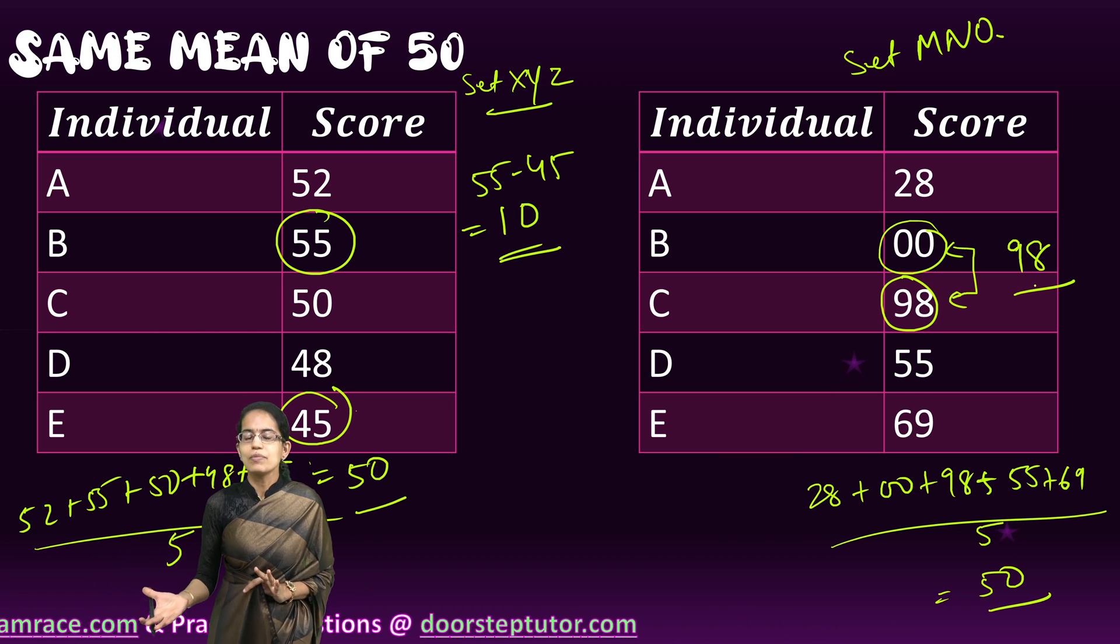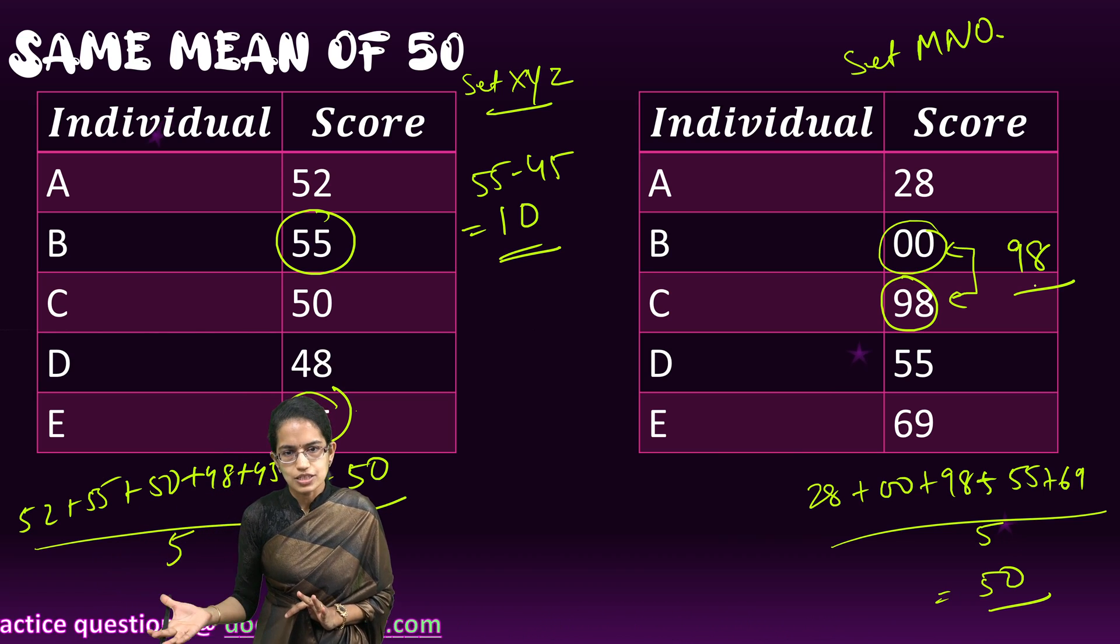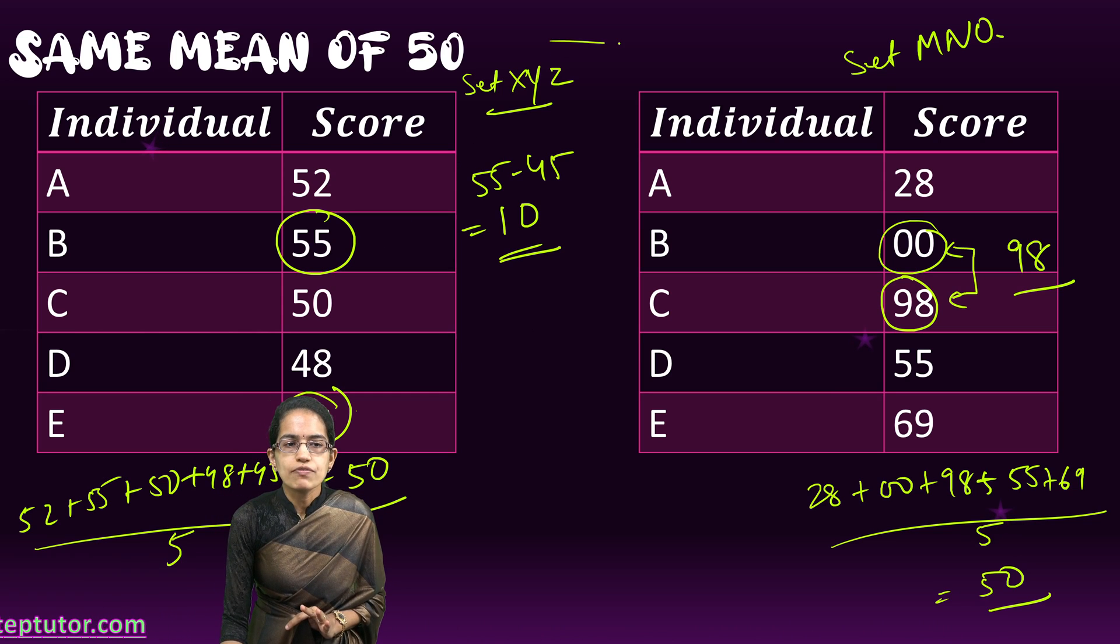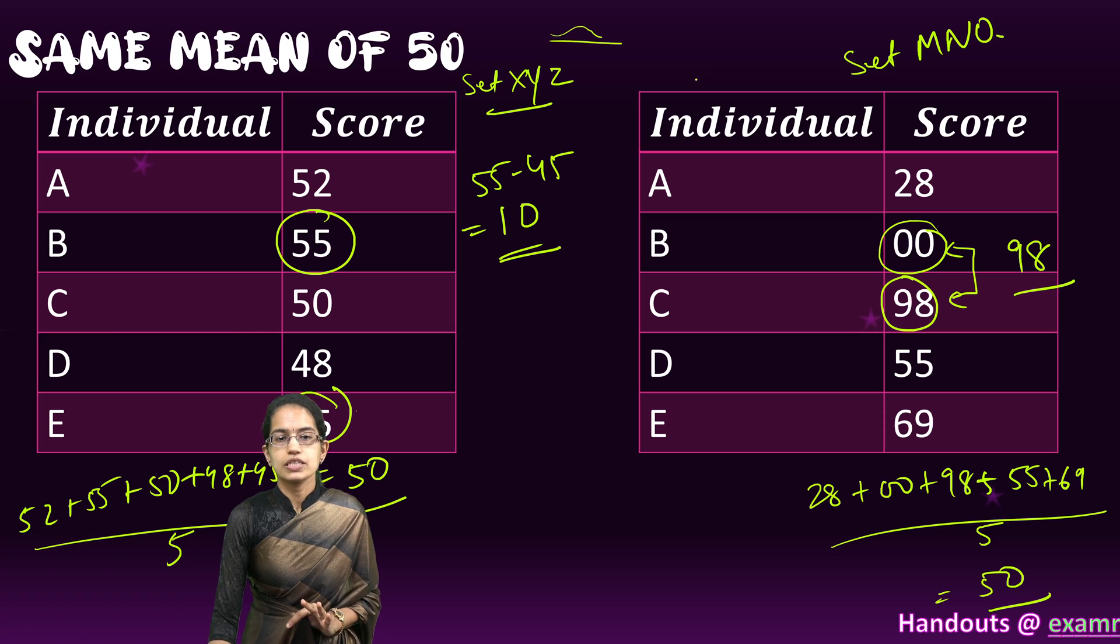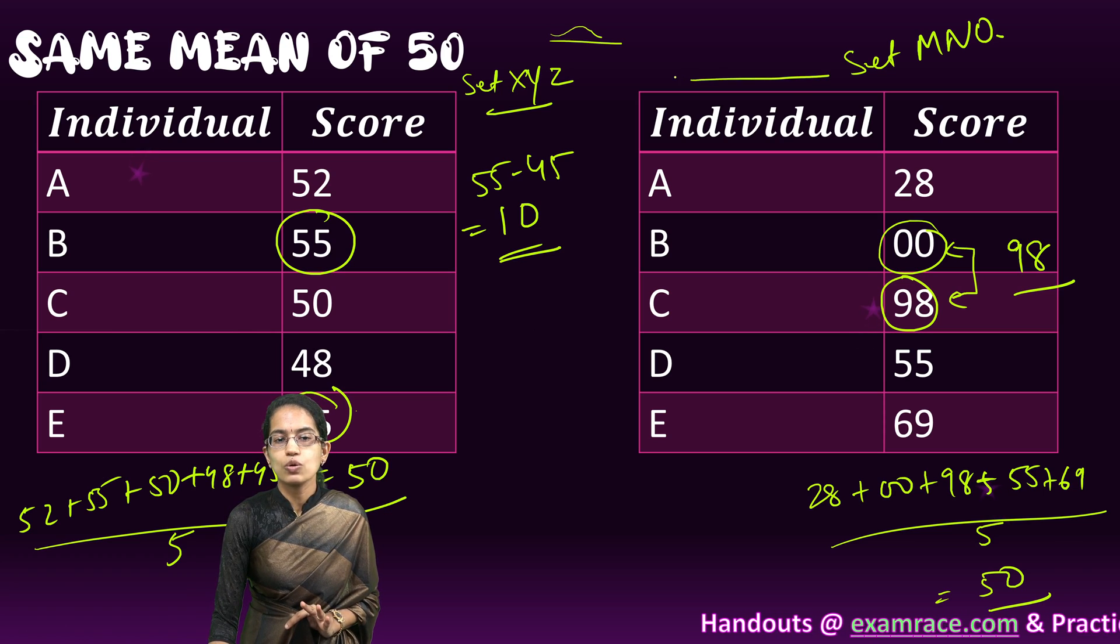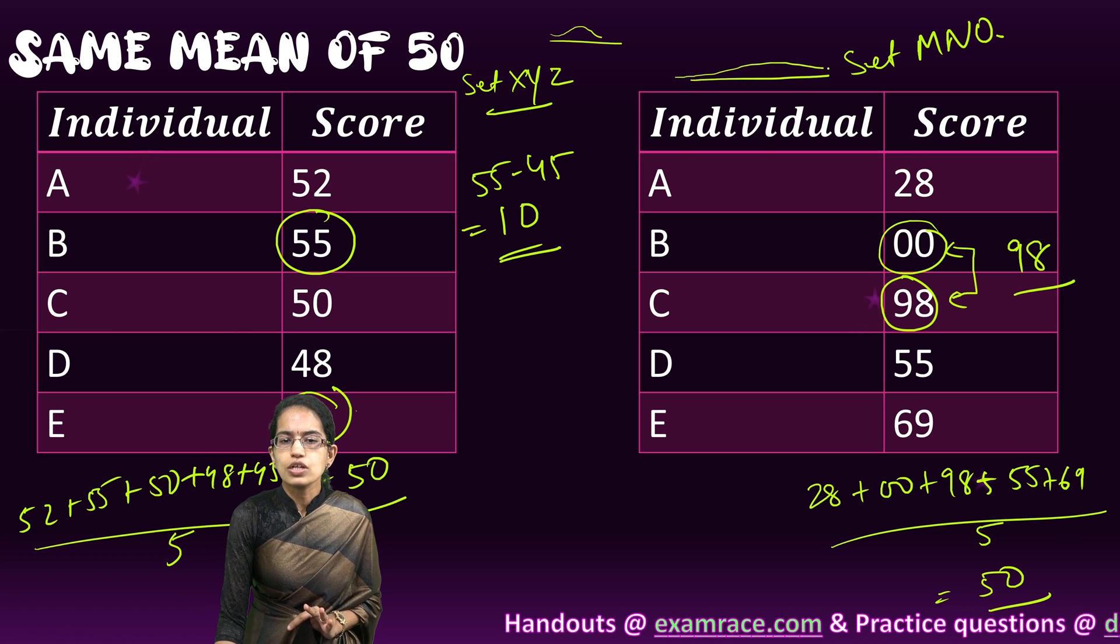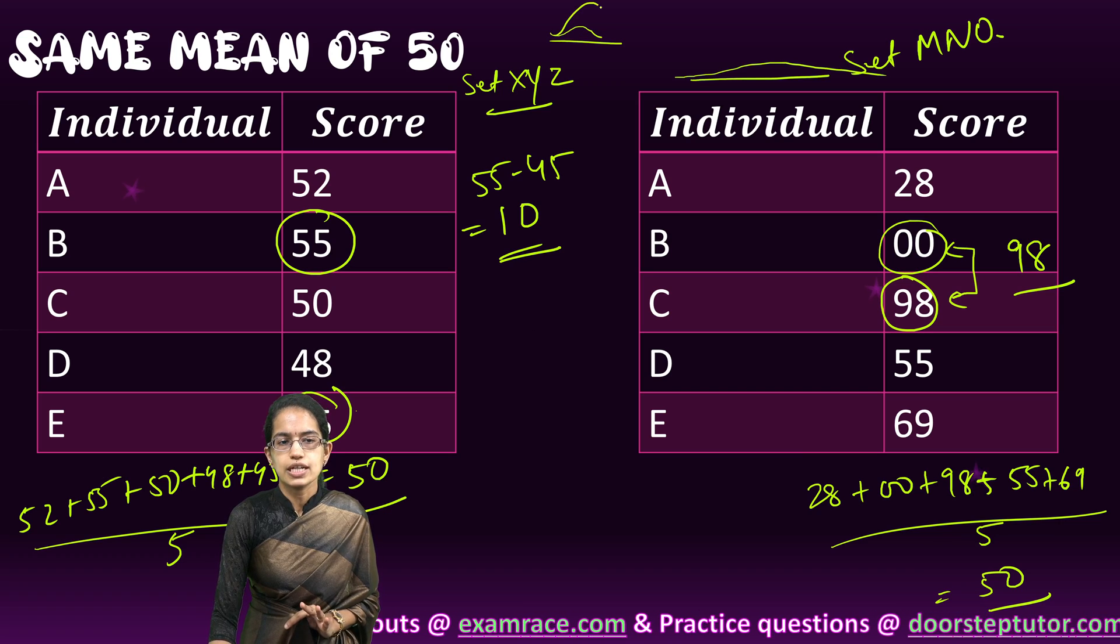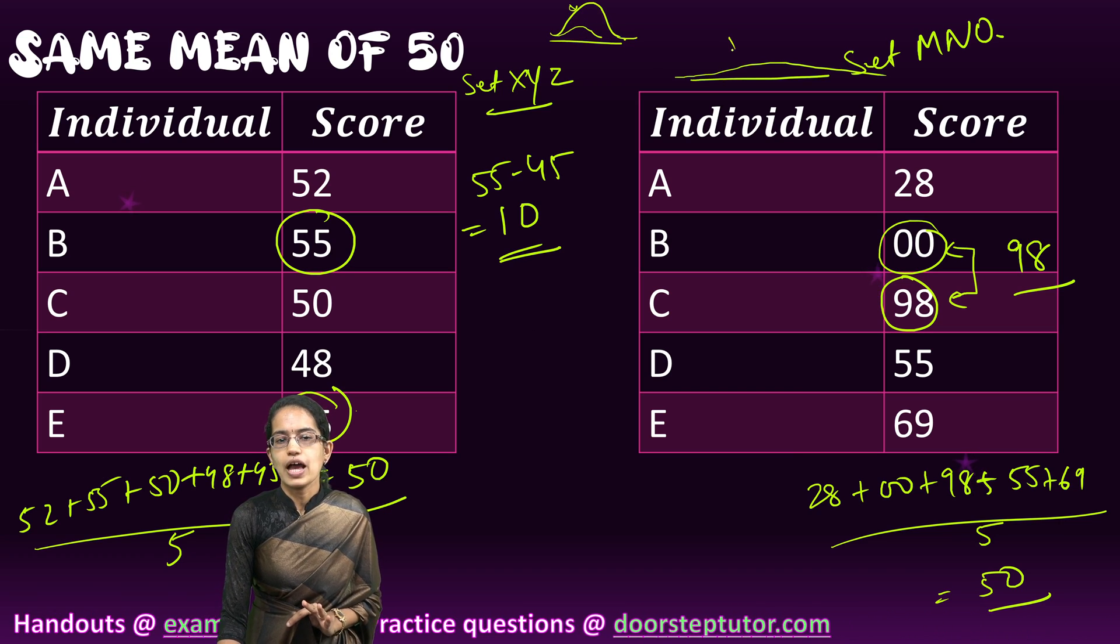This scattering of scores and numbers is what is known as dispersion. In the first case, the scores were very close to the mean value and the curve was relatively steeper. In the second case, the scores are very far off so the curve would be relatively gentler.